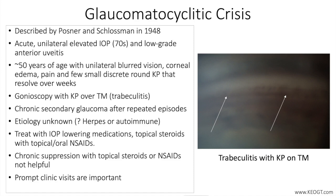Damage to the optic nerve occurs after repeated attacks over a long period of time. The cause is unknown at this time despite several hypotheses which have been explored since the first cases were reported by Posner and Schlossman in 1948.